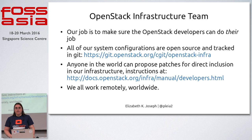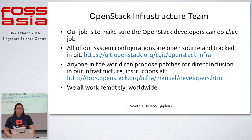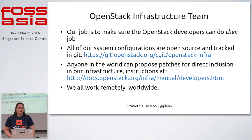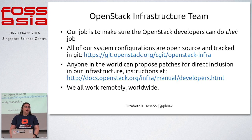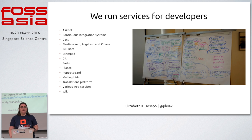All of our infrastructure is open source, and you can find it at git.openstack.org/cgit/openstack-infra. Anyone can propose changes to our infrastructure. We all work remotely — none of us actually works in an office anywhere, and we work across various companies. There are core committers in our project from five different companies.